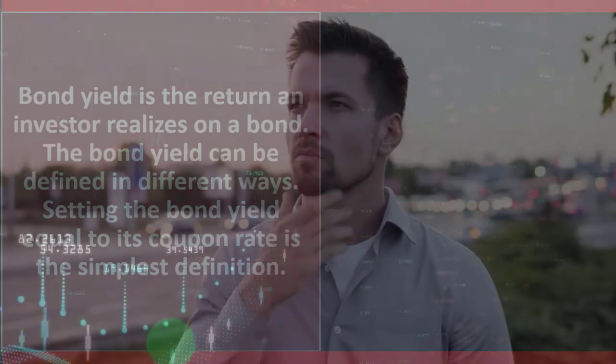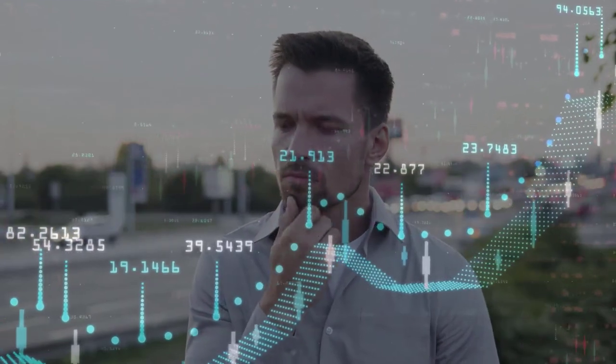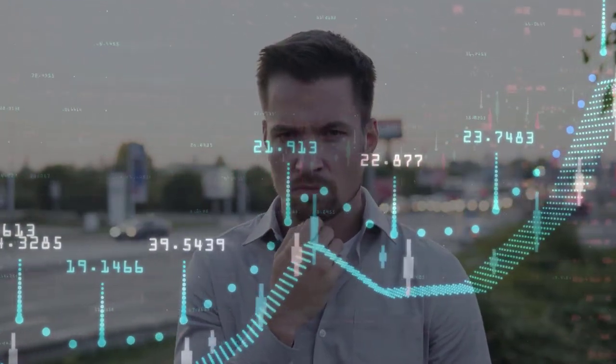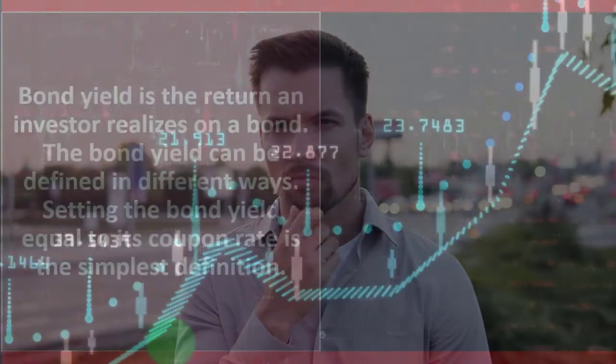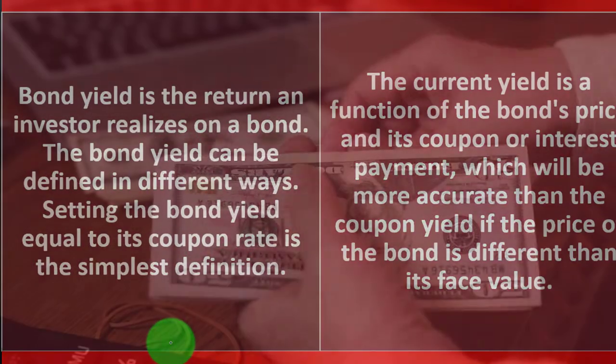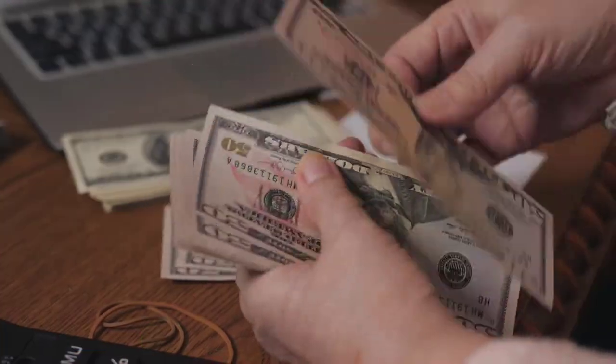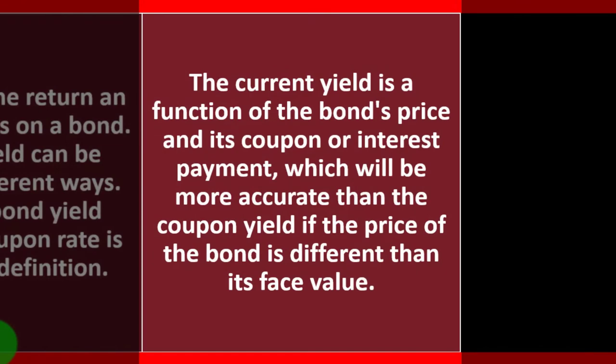We want to figure out what the yield is — basically what our return is on the bond — and use that to make estimates, value different bonds, and think about the best investment strategy. The current yield is a function of the bond's price and its coupon or interest payment, which is more accurate than the coupon yield if the bond's price differs from its face value.